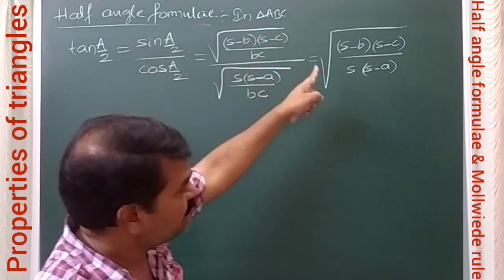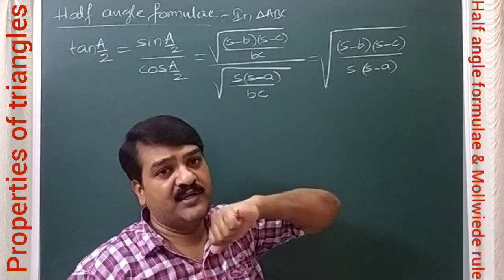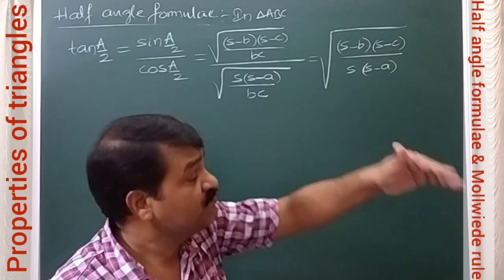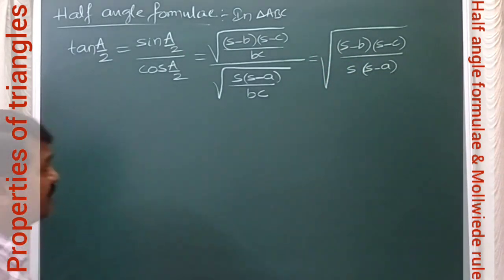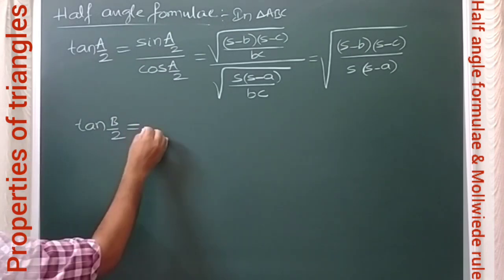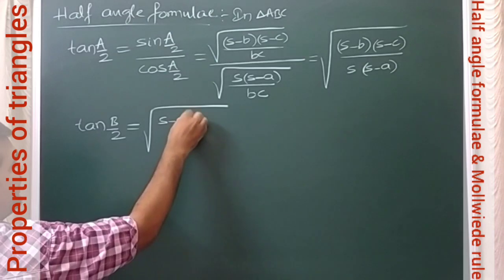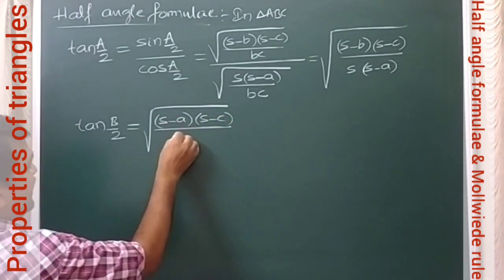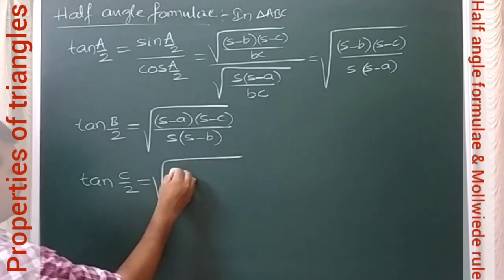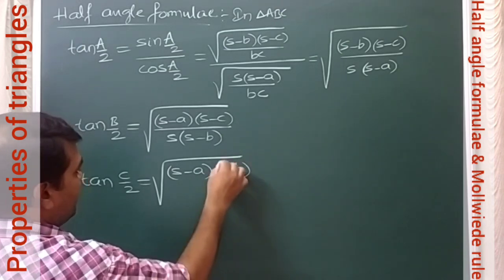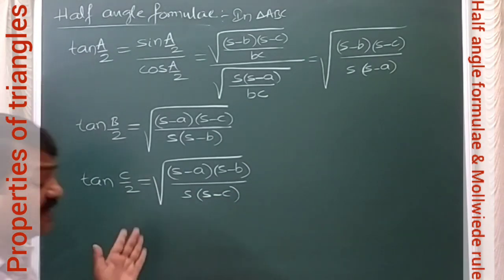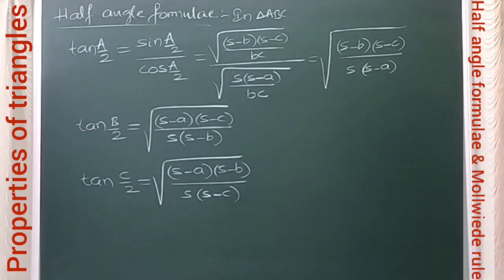By reciprocating tan(A/2), we get cot(A/2) = √[s(s − a) / (s − b)(s − c)]. Similarly, tan(B/2) = √[(s − a)(s − c) / s(s − b)], and tan(C/2) = √[(s − a)(s − b) / s(s − c)]. By reciprocating these, we can also write cot(A/2), cot(B/2), and cot(C/2).